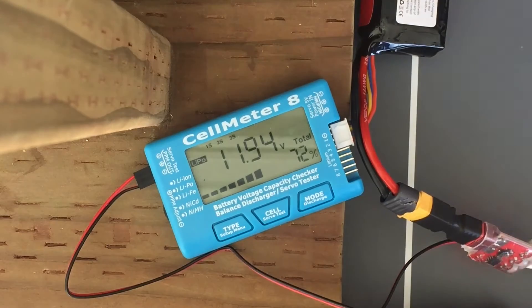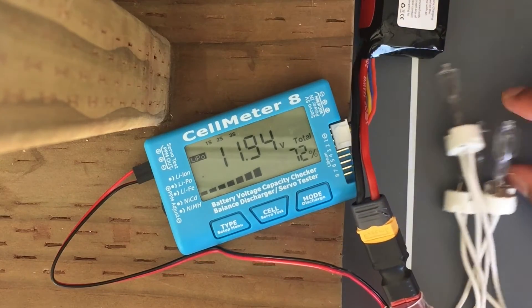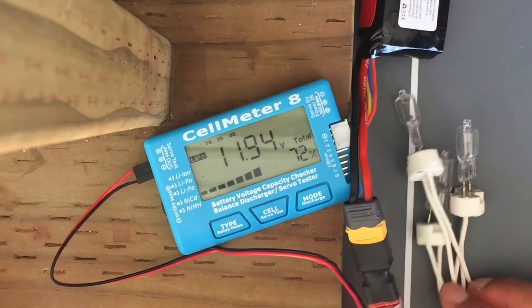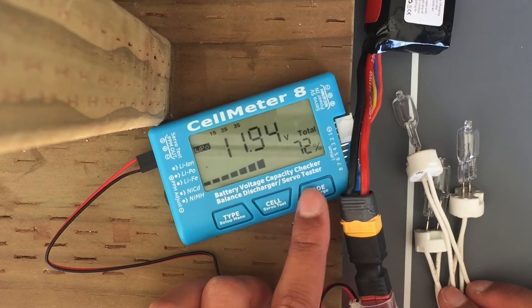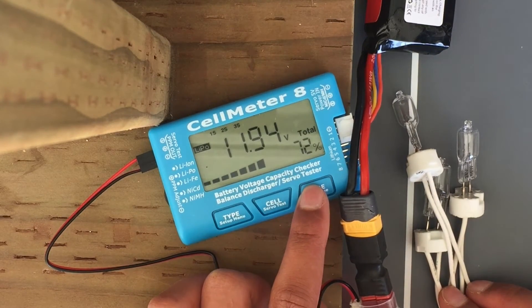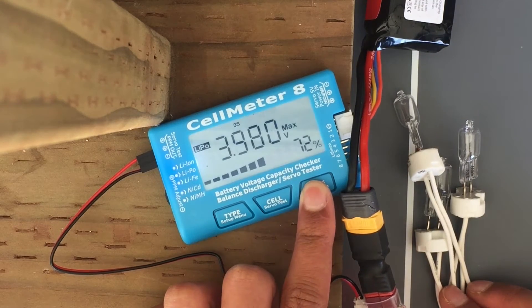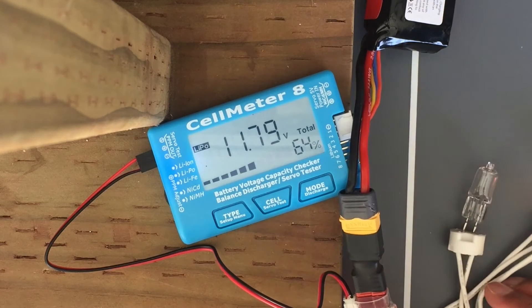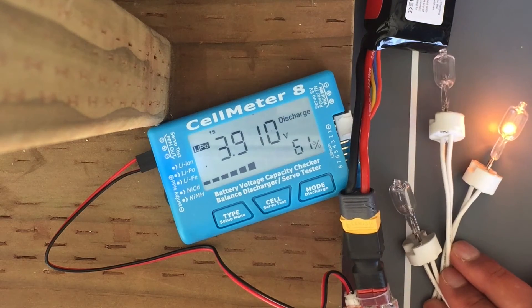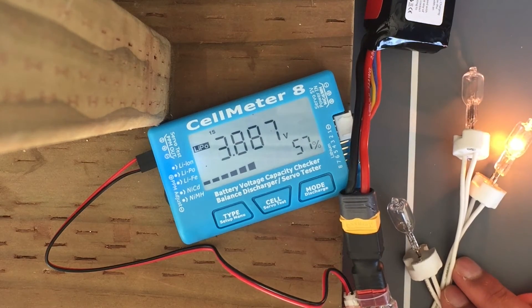Now that it's all set up, I'm going to turn it on. I'm just going to hold 'discharge' right here and it'll automatically discharge as well as balance the batteries, which is what you want. Now it's starting to discharge. As you can see, these lights are lighting up, these halogens.